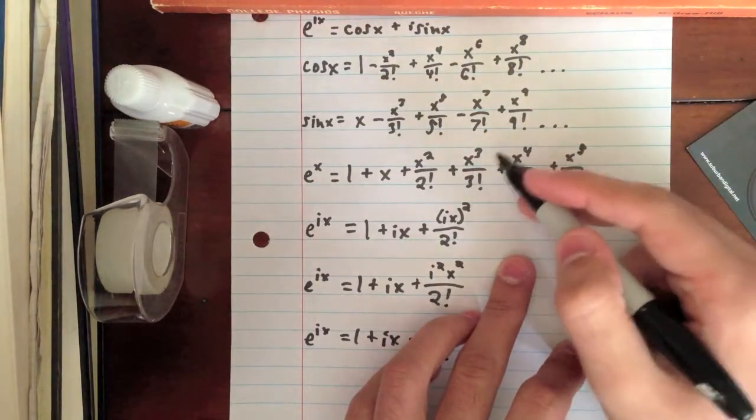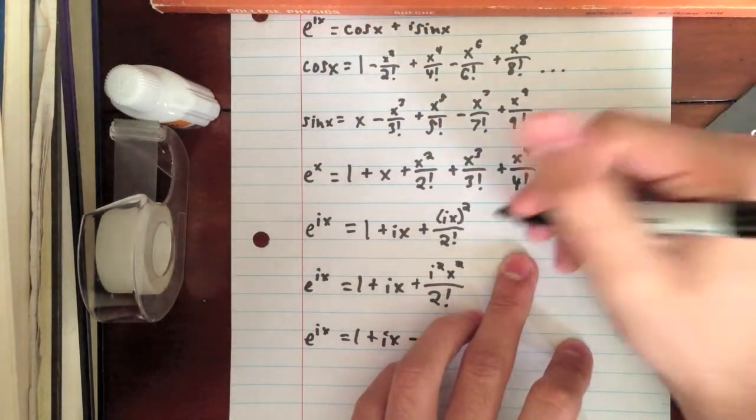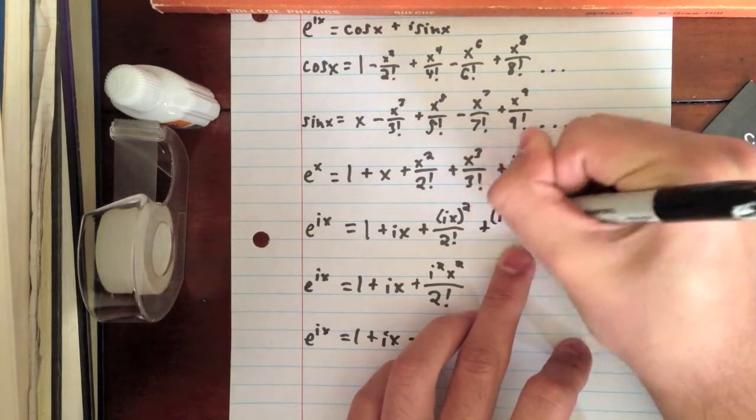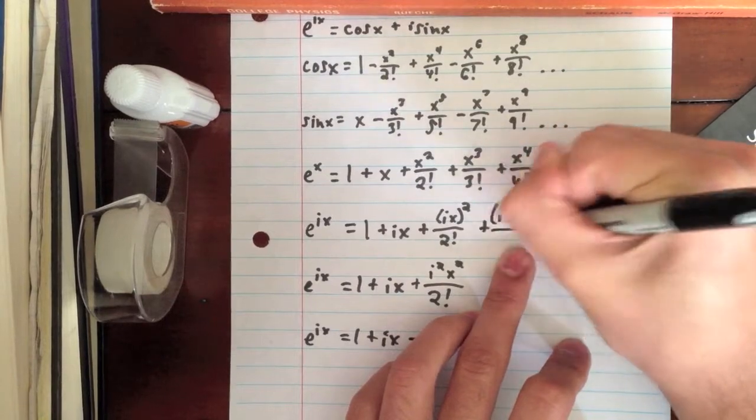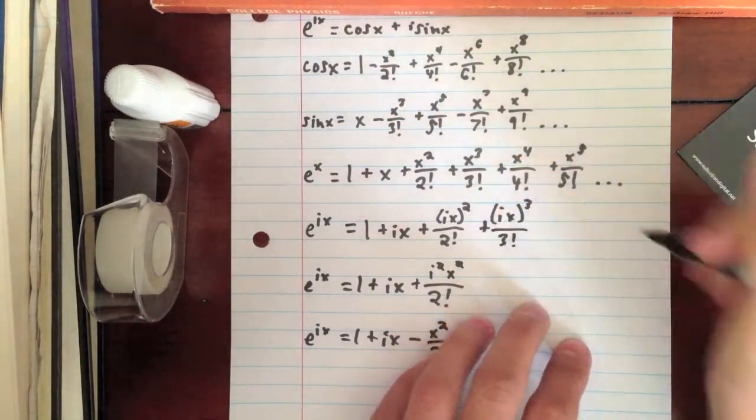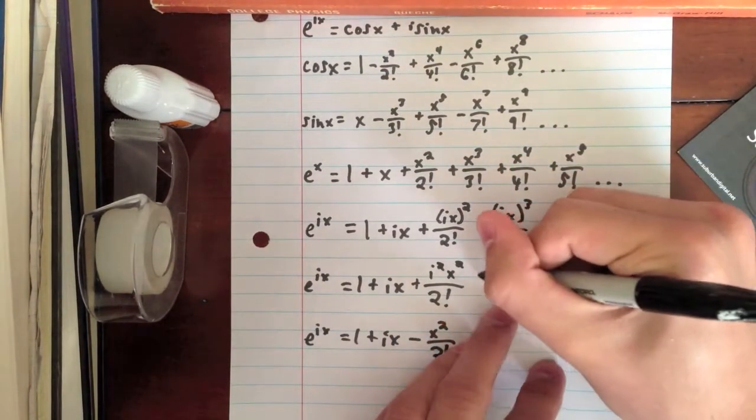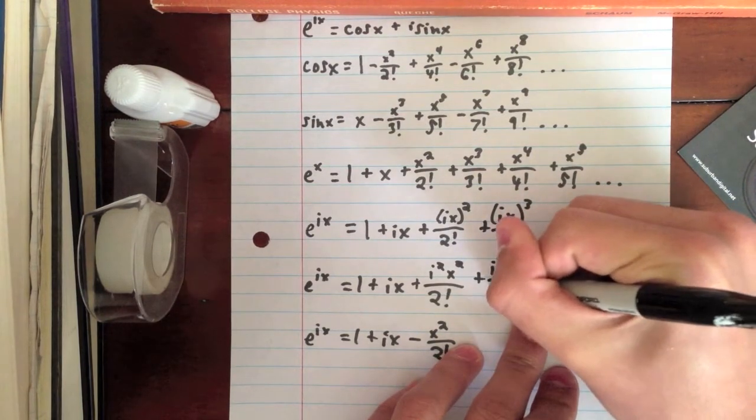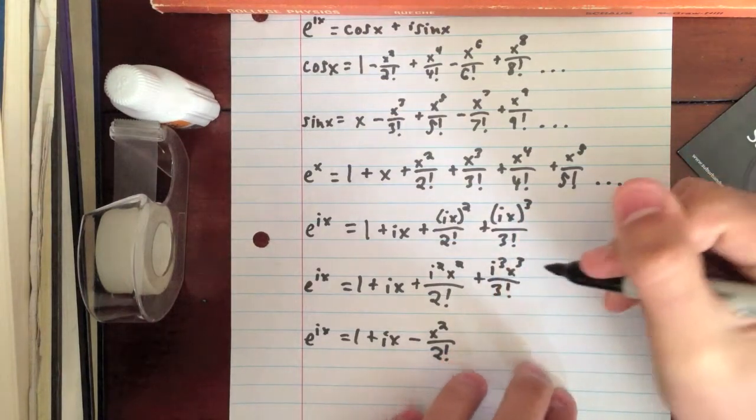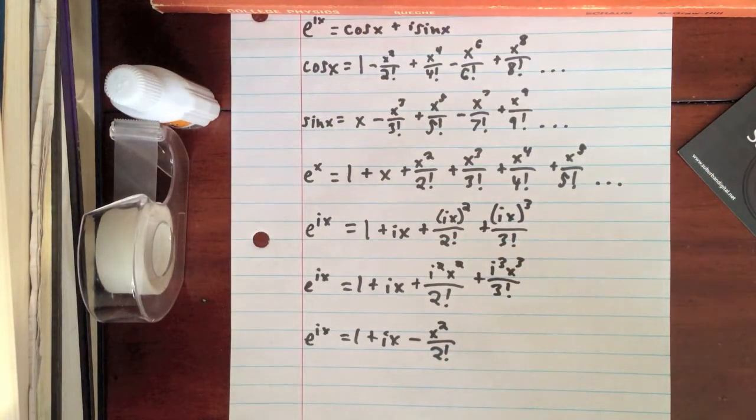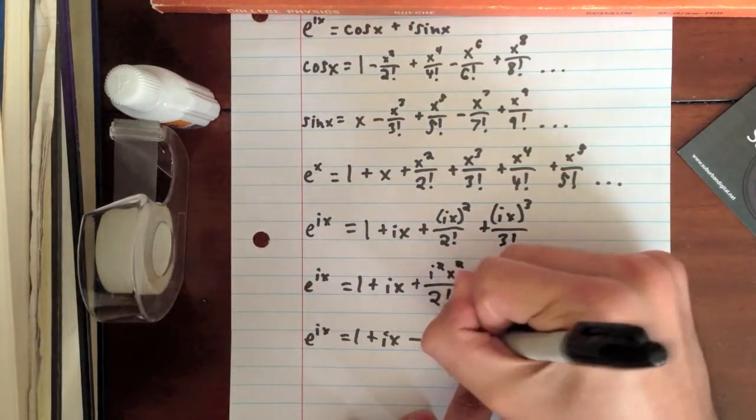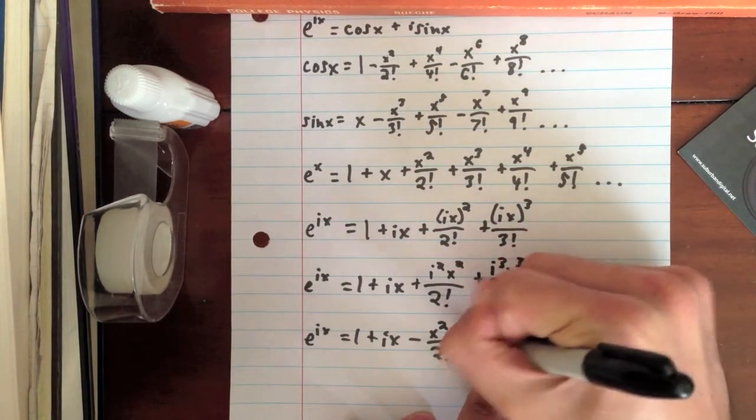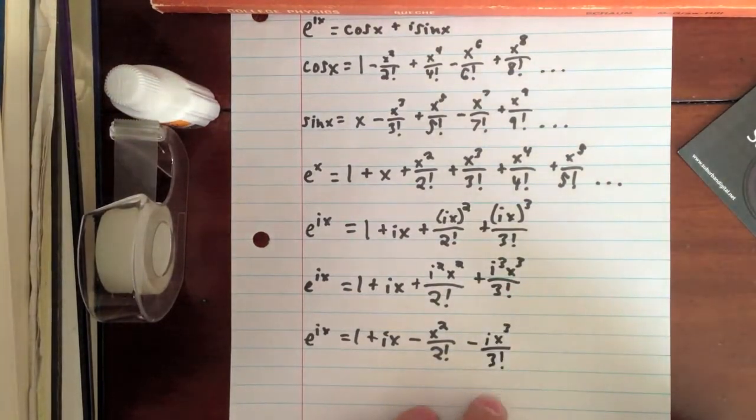So now, we have plus x cubed over 3 factorial. So, plus ix cubed over 3 factorial, which we can write as i cubed x cubed over 3 factorial. And we know that i cubed is equal to negative i. So, we can write this as minus ix cubed over 3 factorial.